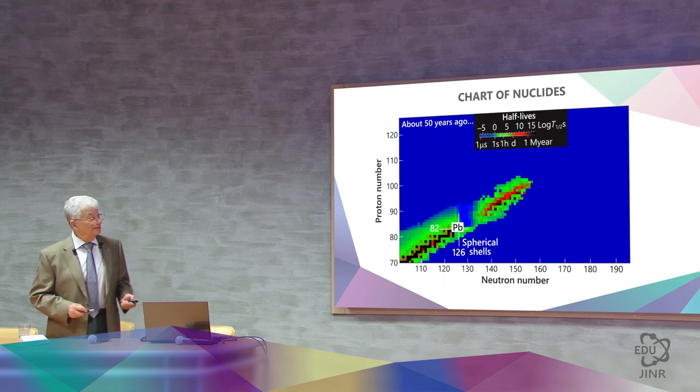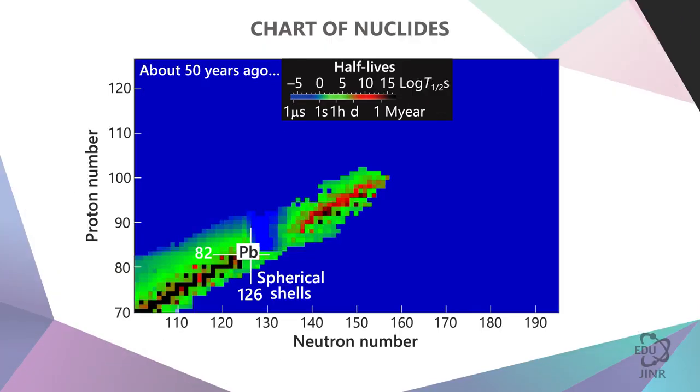Now, if we consider our world, we will have to say that these shell effects, or structure effects or magic effects that we saw on lead, can also be present in the deformed nucleus. And thanks to these effects, we see uranium or thorium here, but this is not where it ends.